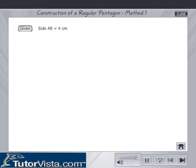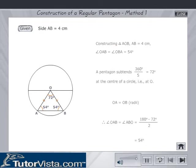Method 1: To construct a regular pentagon, given side AB is equal to 4 cm. Constructing triangle AOB, AB is equal to 4 cm, angle OAB is equal to angle OBA is equal to 54 degrees.